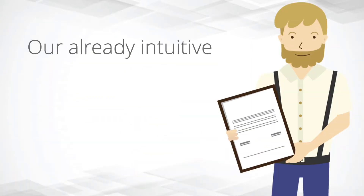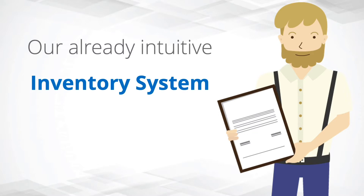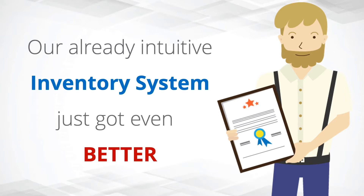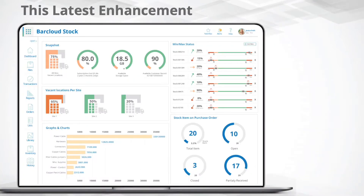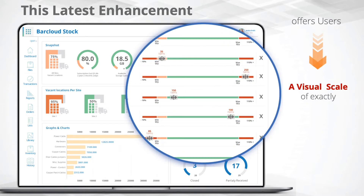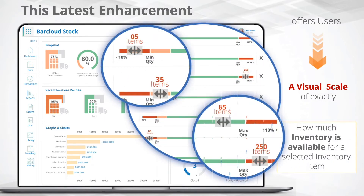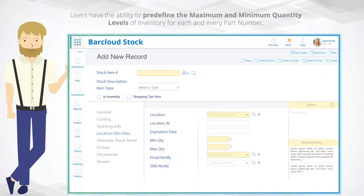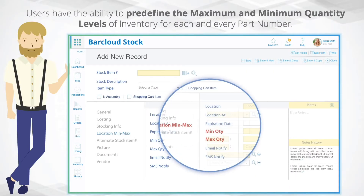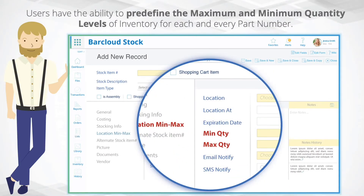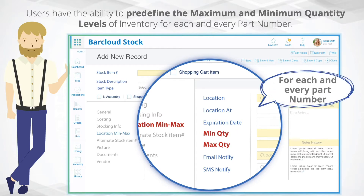Our already intuitive inventory system just got even better. This latest enhancement offers users a visual scale of exactly how much inventory is available for a selected inventory item. Users have the ability to pre-define the maximum and minimum quantity levels of inventory for each and every part number.